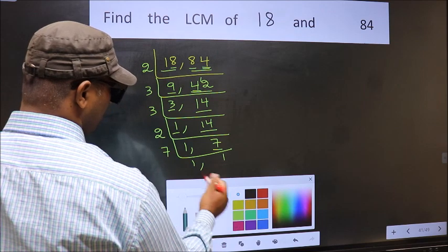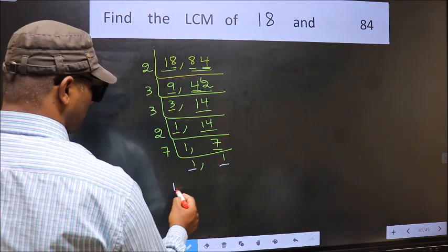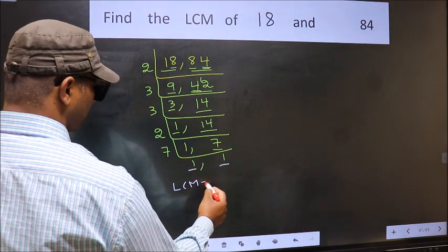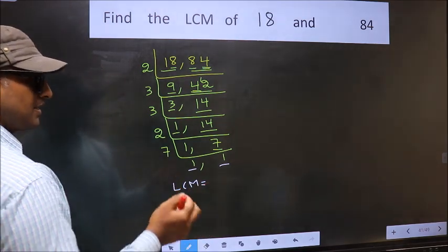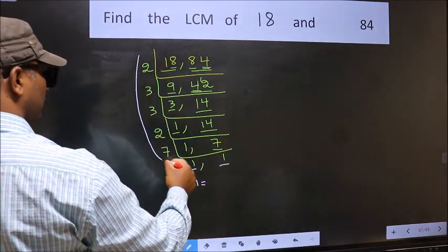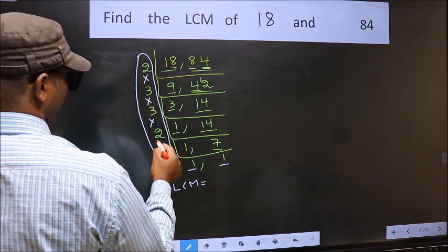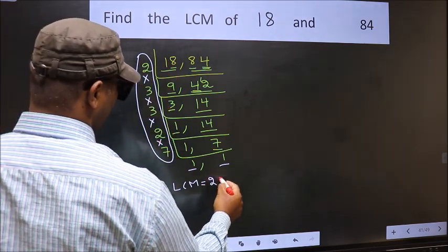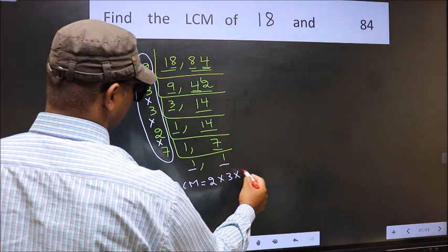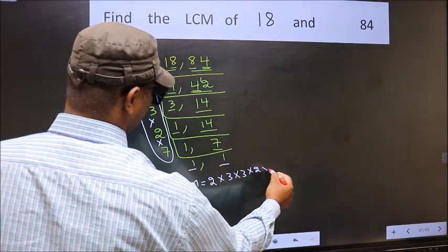So we got 1 in both the places. So our LCM is the product of these numbers. That is 2 into 3 into 3 into 2 into 7.